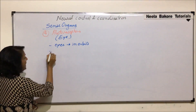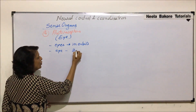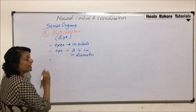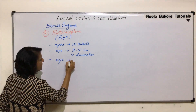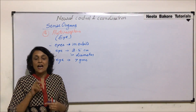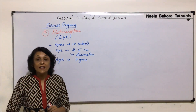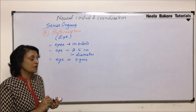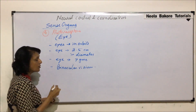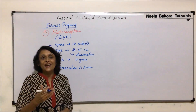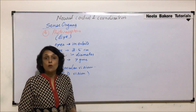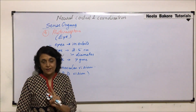Each eye is about two point five centimeters in diameter and weighs about seven grams. In human beings, our eyes are forwardly directed — they are present in the front, and that is why we have binocular vision. Binocular vision actually helps us get 3D perception, so this is 3D vision, and we are able to get this 3D vision only when we are using both our eyes.